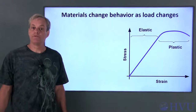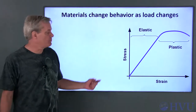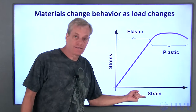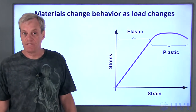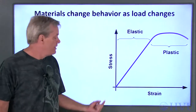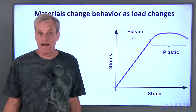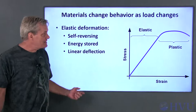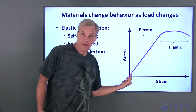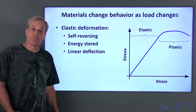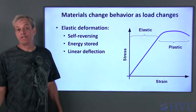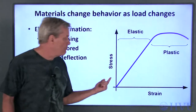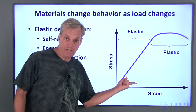One way to characterize a material's behavior is with a stress-strain curve. The horizontal axis is strain, which you can think of as deflection. The vertical axis is stress, which relates to the applied force. In the elastic region, the deflection is said to be self-reversing and the material can return to its original shape. In this region, if I apply more force, I get more deflection.